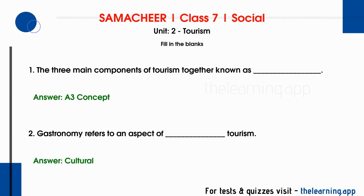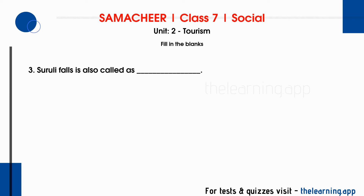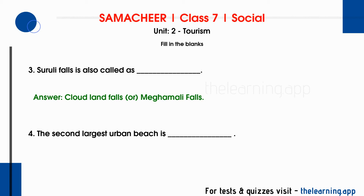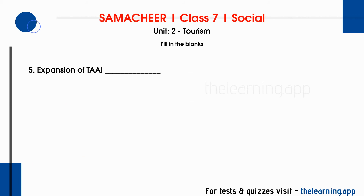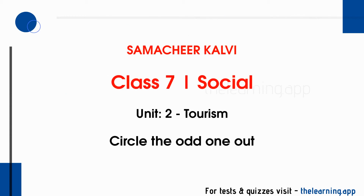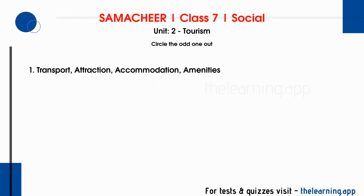The third question: Suruli Falls is also called dash. The correct answer is Cloudland Falls or Magamalai Falls. Fourth question: the second largest urban beach is dash. Correct answer is Marina Beach. Fifth question: expansion of THAI — correct answer is Tribal Agents Association of India.